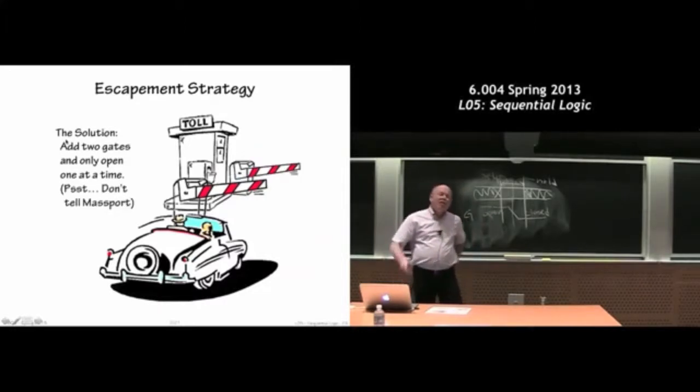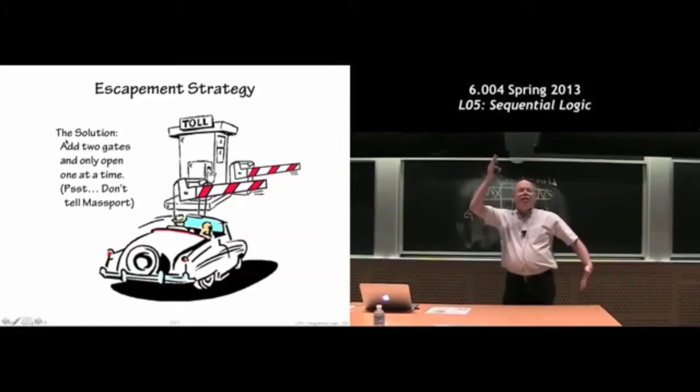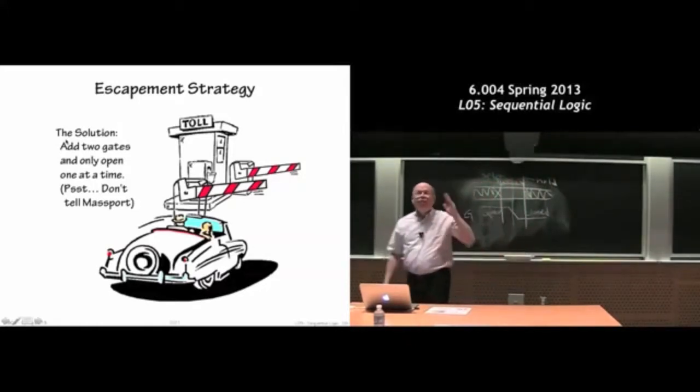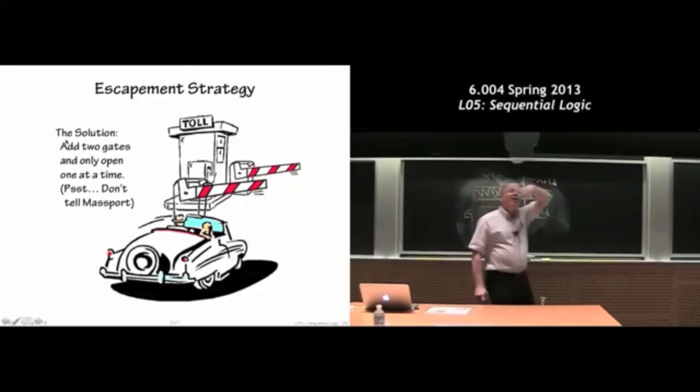And you can see, using these two gates, we come up with a strategy such that we never run the risk of having this sort of path that makes it all the way through the toll booth. That's exactly the analogy we want. We want a little digital toll booth as our memory element that never lets a cycle develop.